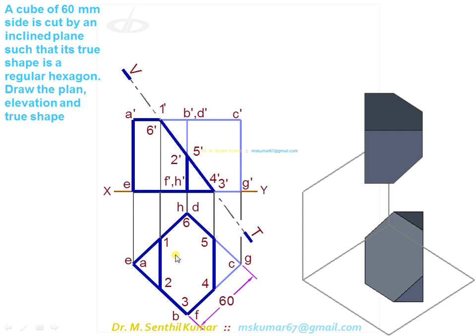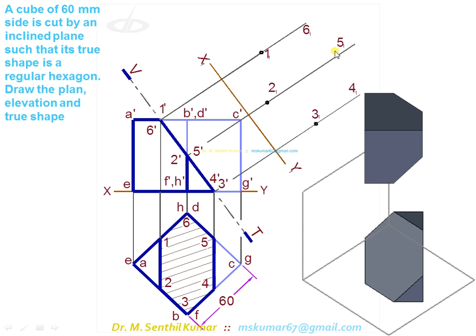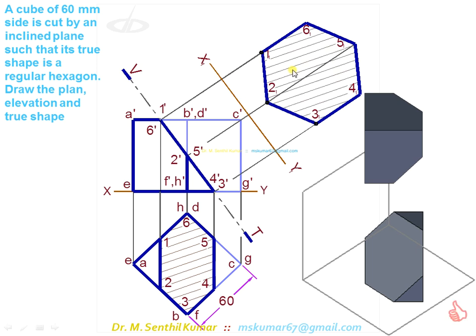For the true shape of the section, draw new X1Y1 reference line. From point 1', draw a line perpendicular to X1Y1. On it, mark point 1'' such that the height of 1'' from X1Y1 is equal to height of 1' from XY. Follow the similar procedure for the remaining points 2, 3, 4, 5, and 6. Join all these in proper sequence. It must be a regular hexagon - all sides are equal, all angles are equal. Hatch it. This is the answer.